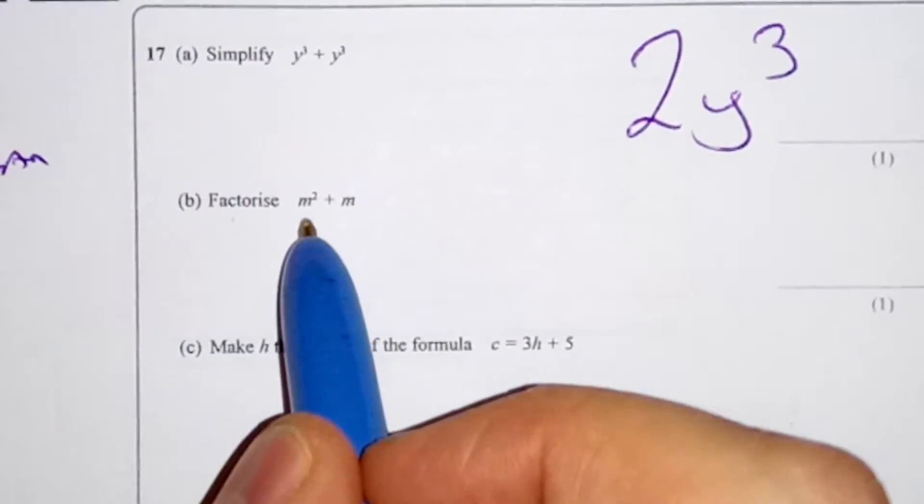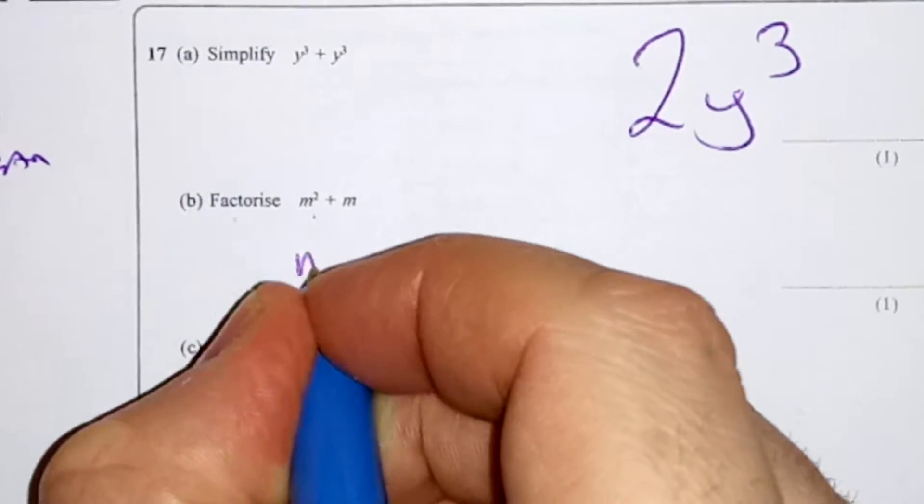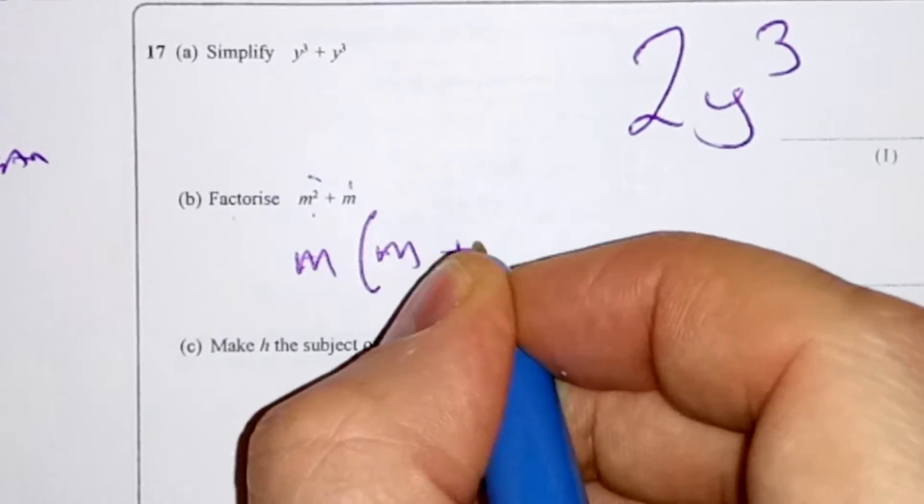It says factorize, and factorize means take out the common factor. M is in both. M times what is m squared? M. M times what is m? 1.